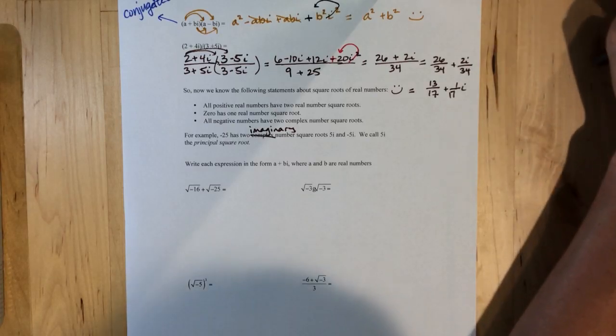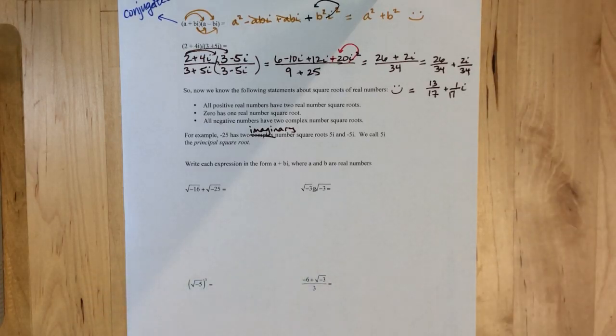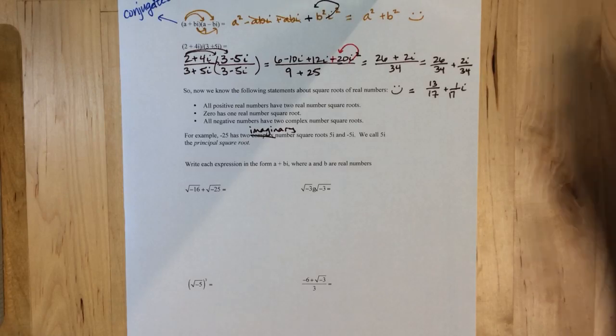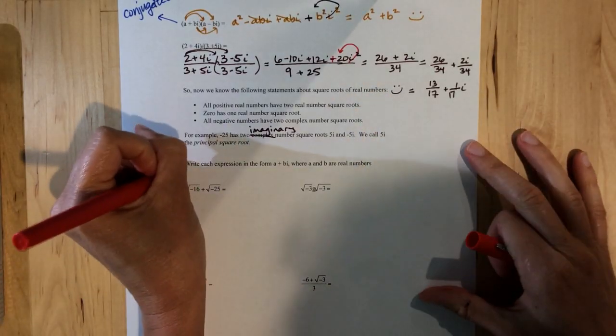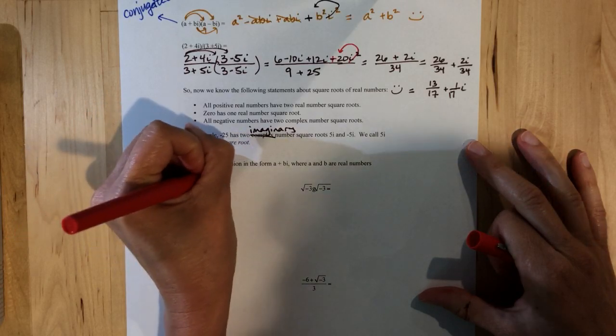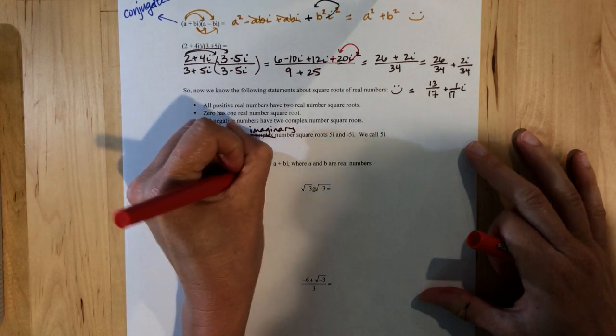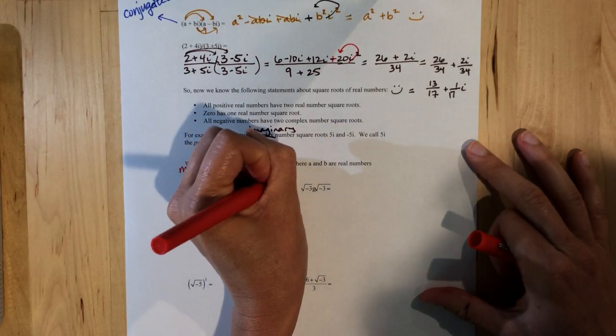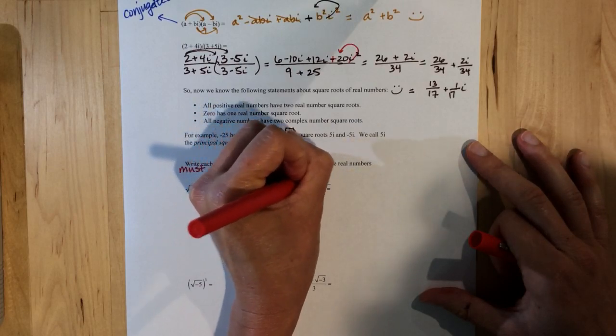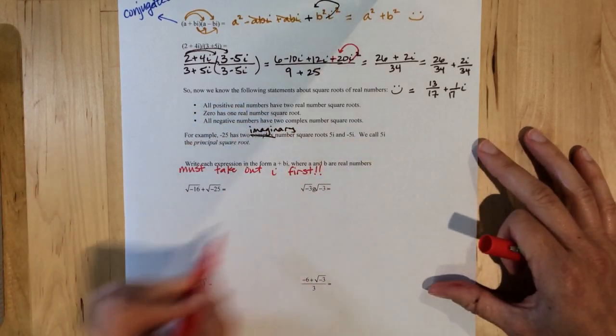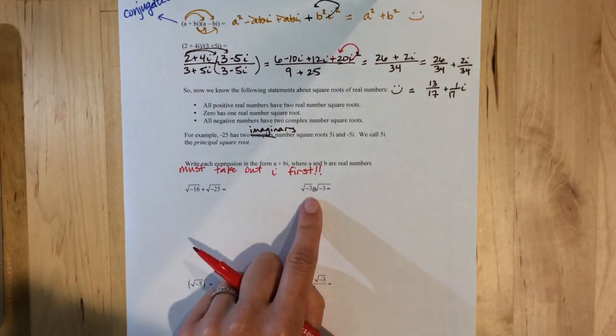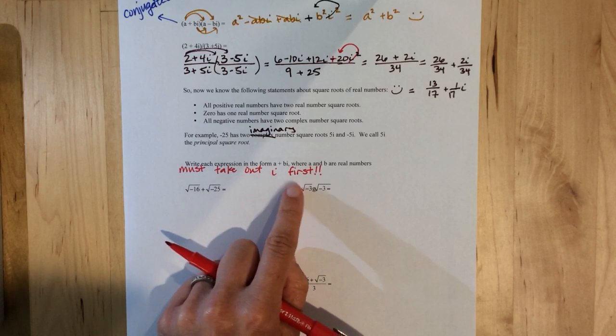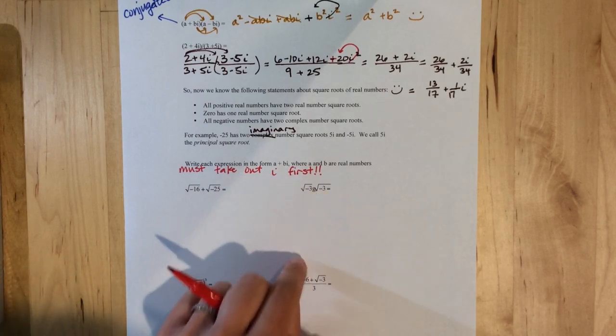So now some examples of just using and getting used to imaginary numbers. First off with imaginary numbers, must take out i first. So from all of these, if you have a negative under the square root, you have to take the i out, the version of i first.